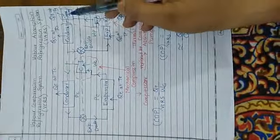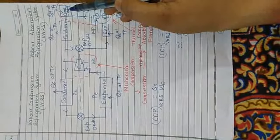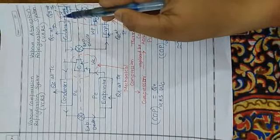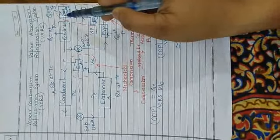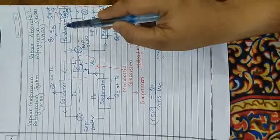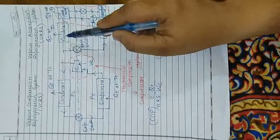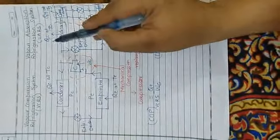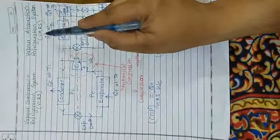In generator, heat is supplied. So the refrigerant vapors are formed at high temperature and their pressure is also increased. These vapors pass through the condenser and reject heat to the surroundings.